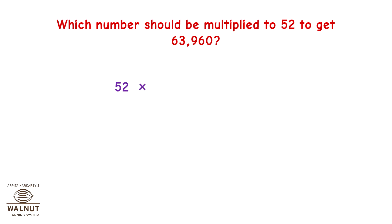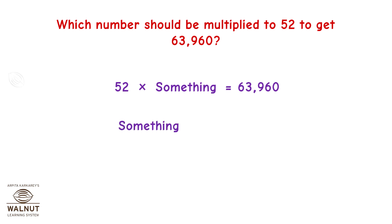Let us try one more. Which number should be multiplied by 52 to get 63,960? We know that 52 times something equals 63,960, so we need to find out what that is. That means that something is actually 63,960 divided by 52. The quotient will give us our answer. Let us do the long division.